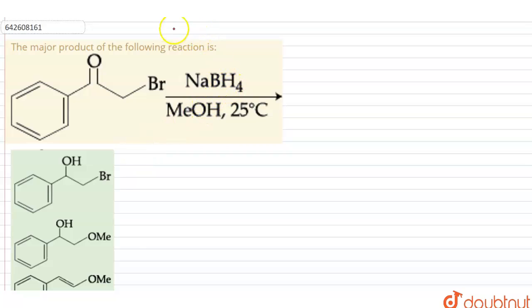Hello students, let us solve this question. The major product of the following reaction is, so we have a benzene ring attached to C double bond O, CH2Br, and that is in the presence of NaBH4 and methanol at 25 degrees Celsius.